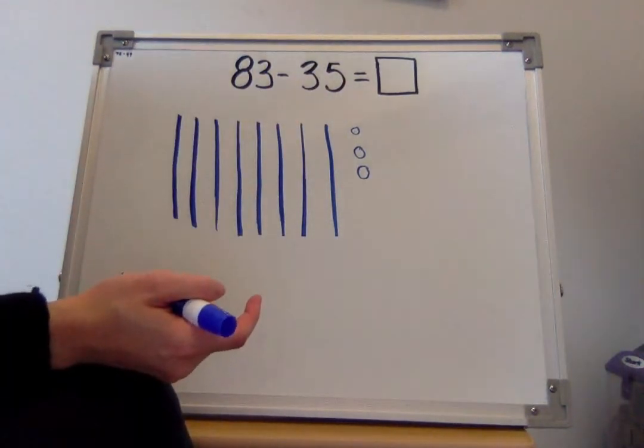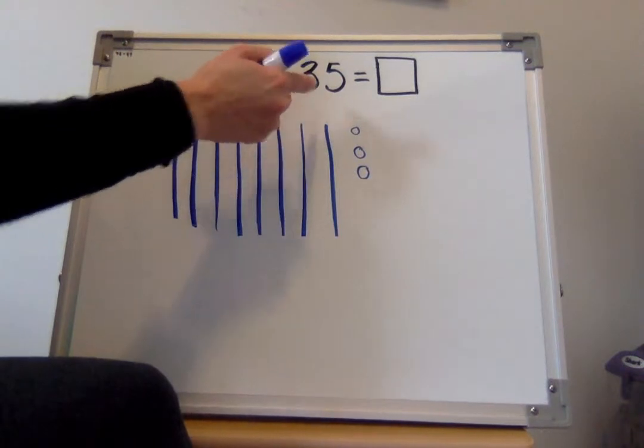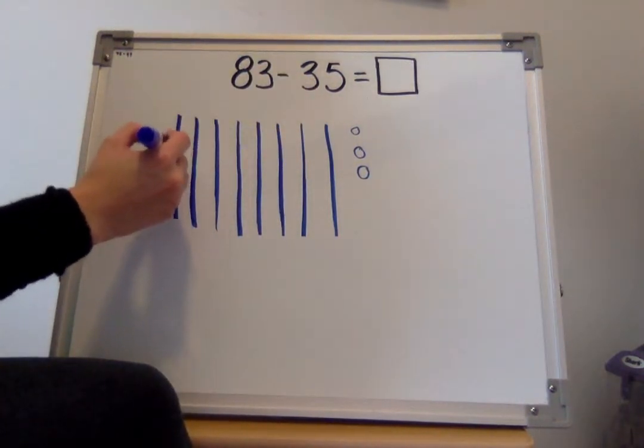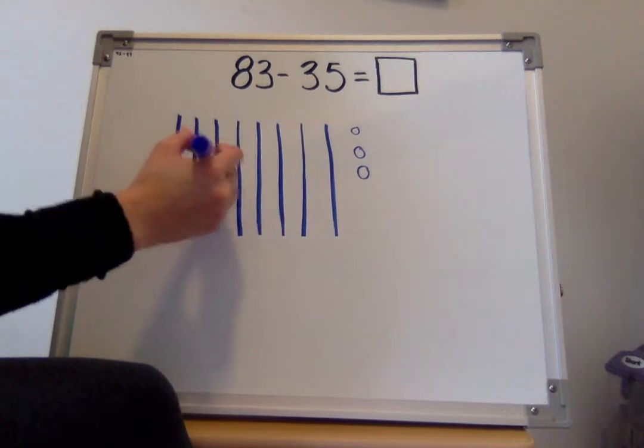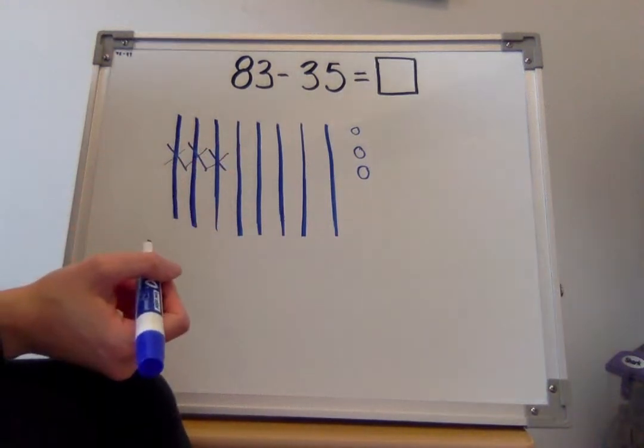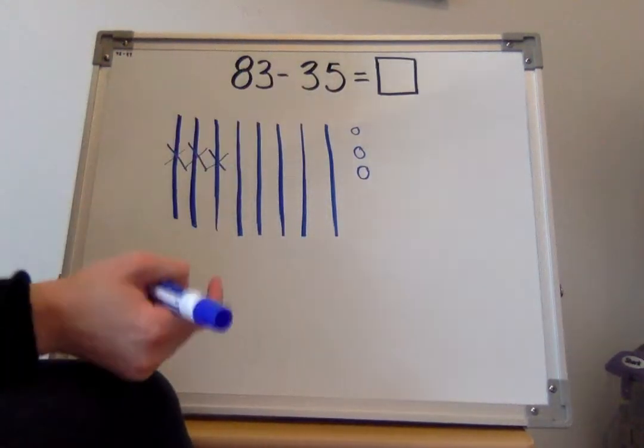Alright, cool. So that means I need to take away 30, that means 3 tens. 10, 20, 30. Now I need to take away 5 ones.